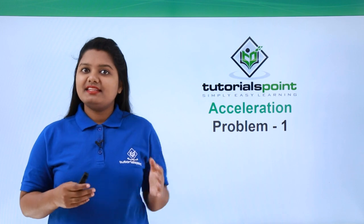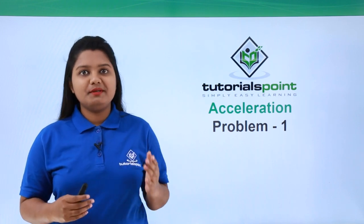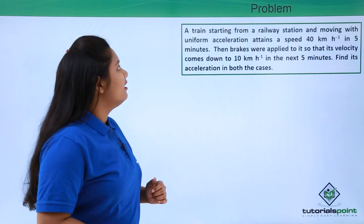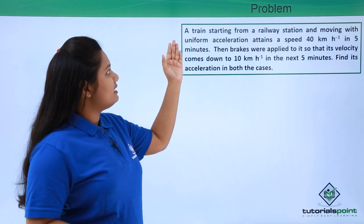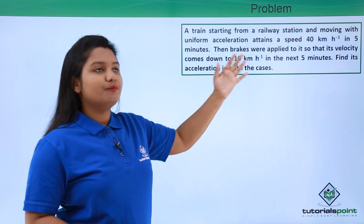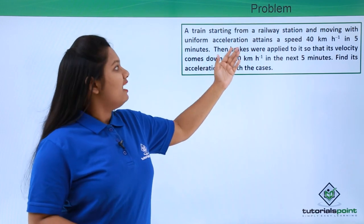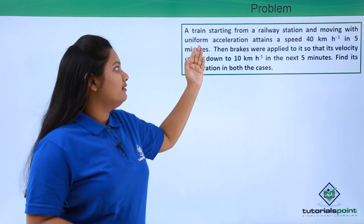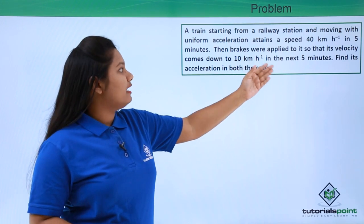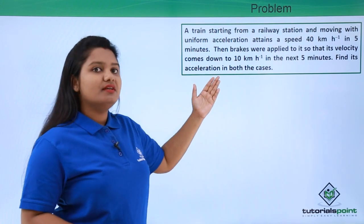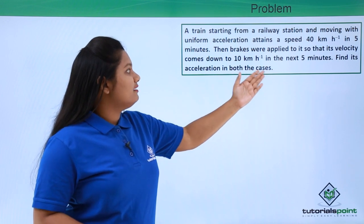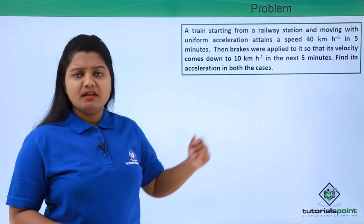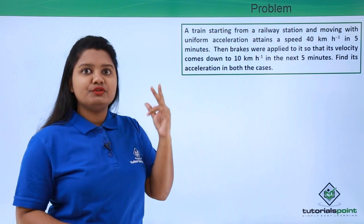Hello everyone, in this video we'll be solving a problem related to acceleration. The problem reads: a train starting from a railway station and moving with uniform acceleration attains a speed of 40 kilometers per hour in five minutes. Then brakes were applied so that its velocity comes down to 10 kilometers per hour in the next five minutes. Find its acceleration in both cases.